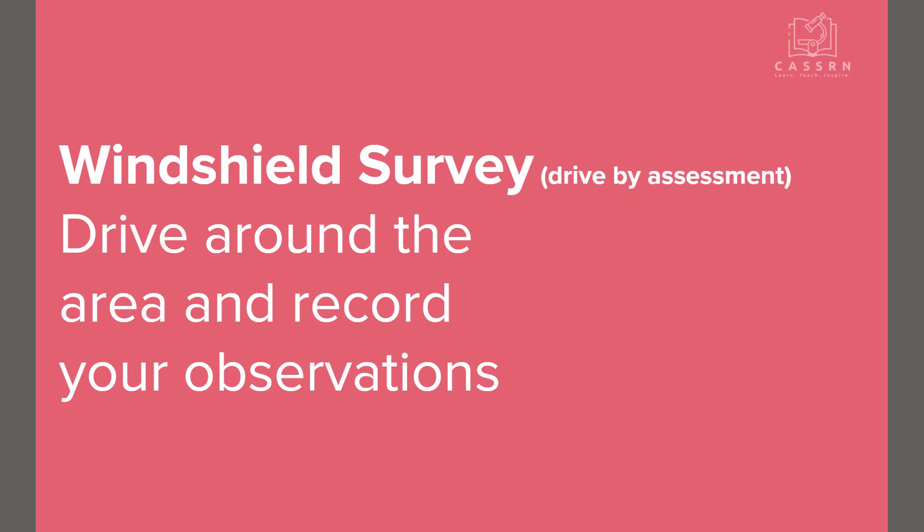A windshield survey is basically a drive-by assessment. You drive around the area and record your observations. This is a basic introductory way to assess the general area. You're going to write down what you observe, focusing on anything the community might be lacking — infrastructure like roads, sidewalks, or streetlights; types of businesses; availability of grocery stores or fresh produce; housing type, age, and condition. You also want to look at availability of public resources like parks or healthcare, public buildings, traffic at different times of day, noise level, and safety.